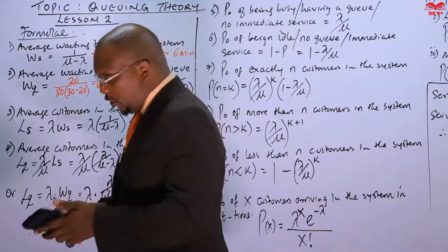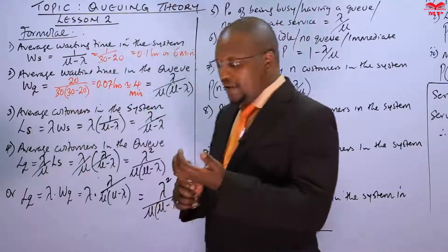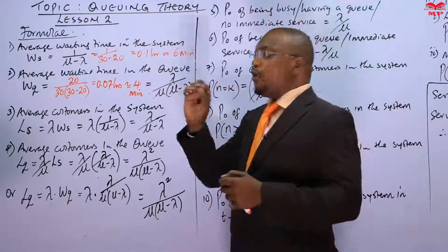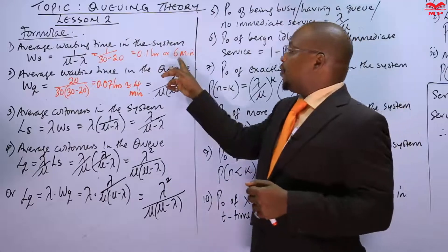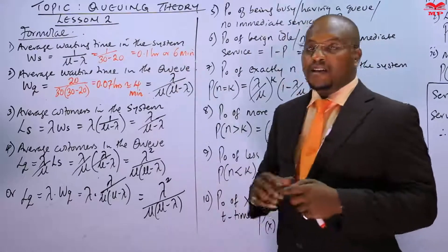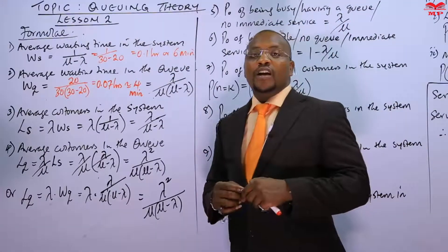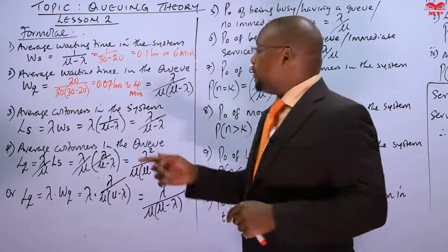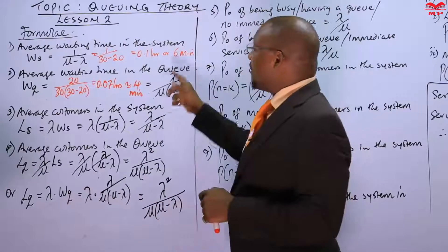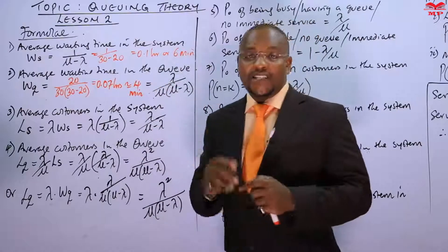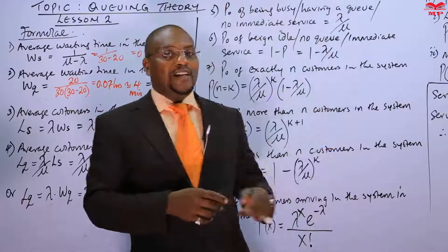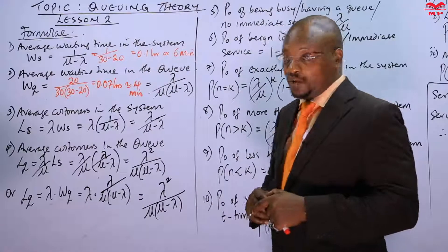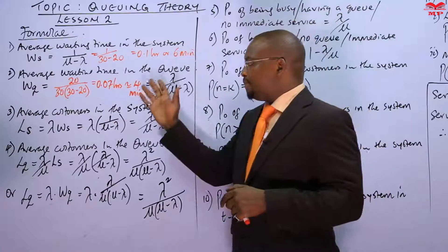So in the queue, at the waiting lounge, you are going to spend 4 minutes. But when you get to the facility to be offered a service or for consultation, you take 2 minutes. And indeed it is very true that the difference between 6 and 4 is 2 minutes, which is what you are told — that Dr. Rosemary spends 2 minutes with a patient for consultation. So that is very true and it is evidence right there.